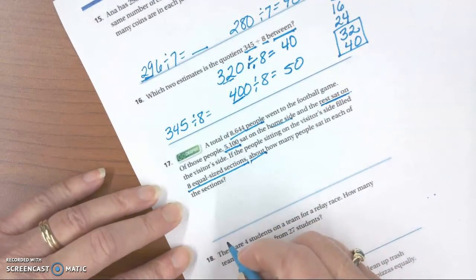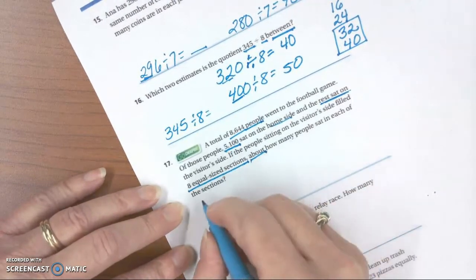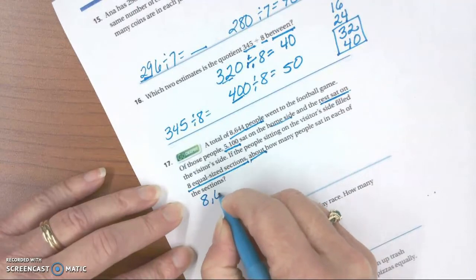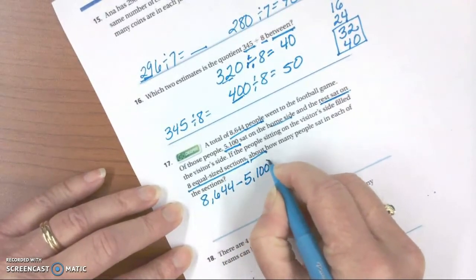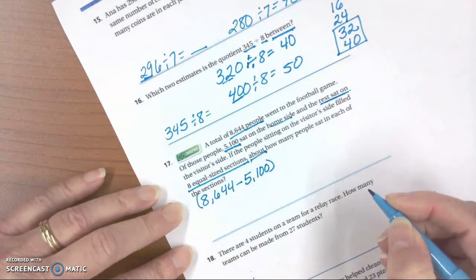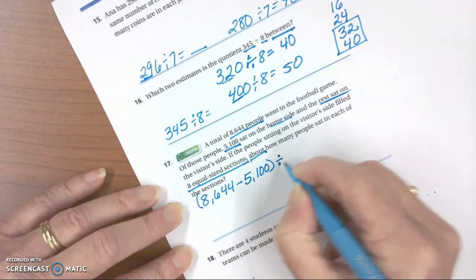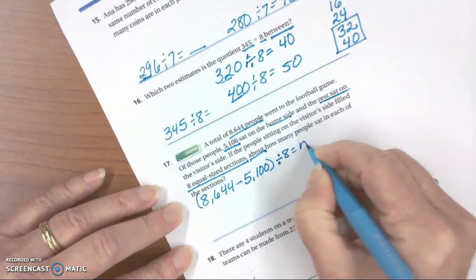So to solve this problem, we're going to be subtracting. And if we wrote this as a complete expression, we would say 8,644 subtract 5,100. Put that in parentheses because that's what we want to do first. Divided by 8 would give us our answer.